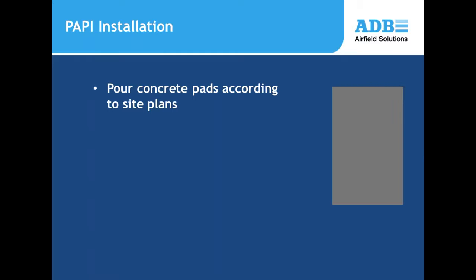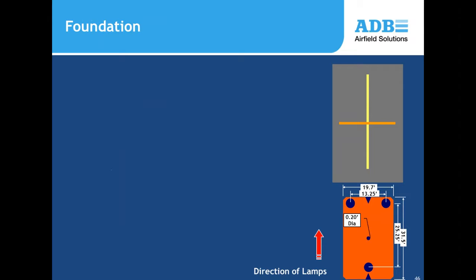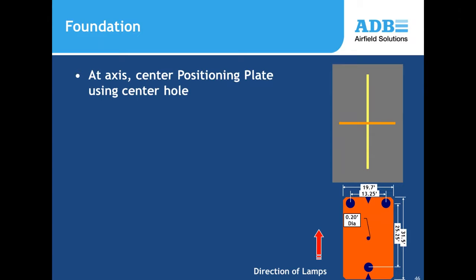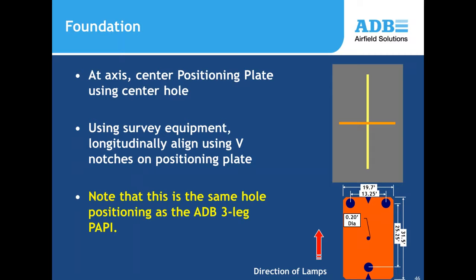Installation notes are similar to a classic PAPI installation. Lay a concrete pad and use survey equipment to draw a transverse axis with respect to the runway centerline. A mounting template in the manual shows placement of the three PAPI legs and allows for their alignment. Place the template and drill out the mounting and flange locations.